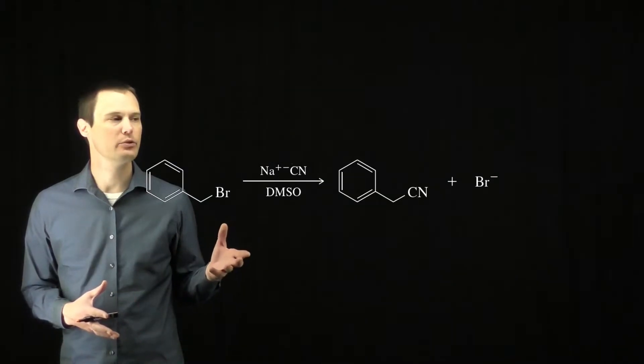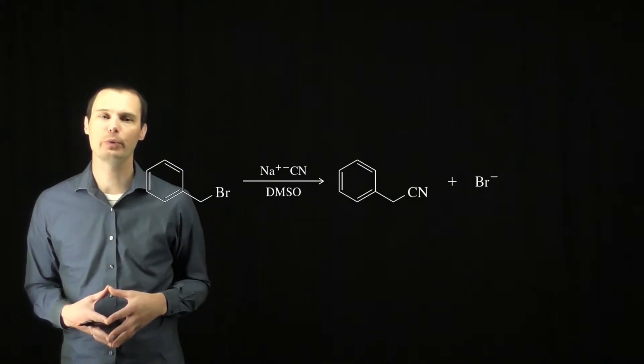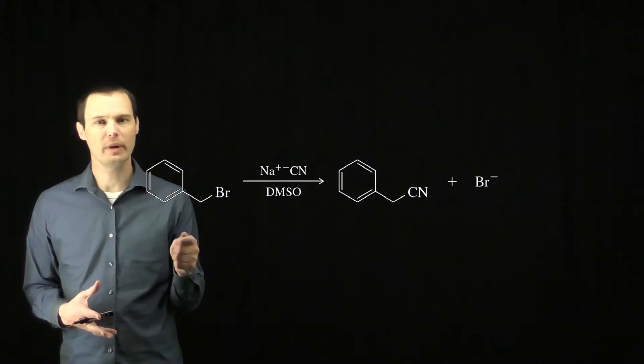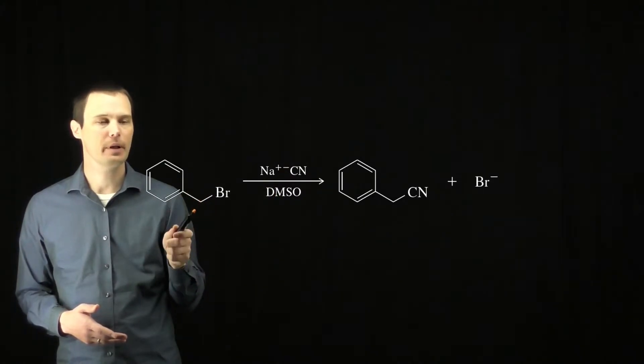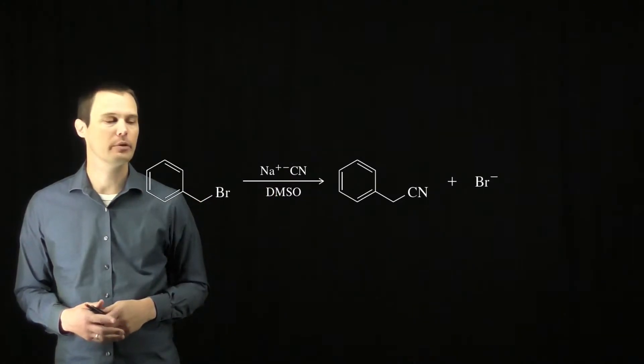This question asks us to draw the mechanism of this reaction given that it is an SN2 reaction. An SN2 is the direct displacement of a leaving group by a strong nucleophile. Here we have cyanide as our strong nucleophile and the alkyl halide as our carbon bearing the leaving group.